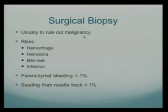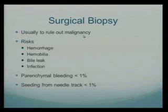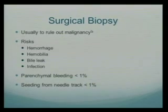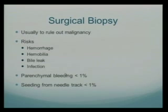Most times you'll biopsy in a scenario like: someone with a history of colorectal cancer who was treated, and six months later has an elevated CEA level. You get a CT of the abdomen and pelvis, find liver lesions, and want a biopsy because the oncologist would not want to give chemotherapy unless they have a tissue diagnosis. Risks of surgical biopsy include hemorrhage, hemobilia, bile leak, and infection. Parenchymal bleeding in the liver is less than 1%, and seeding from the needle tract is also less than 1%.